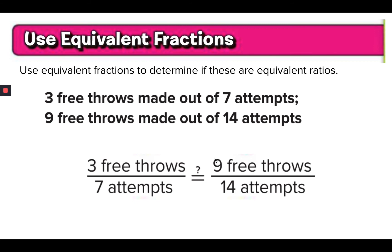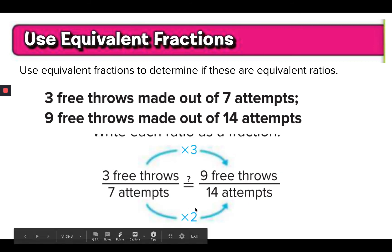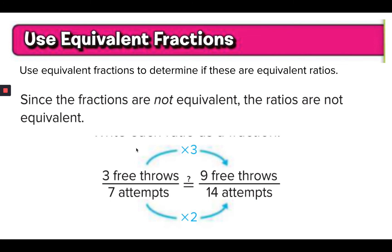Well, 3 times 3 is 9. If you multiply by the same thing on the bottom, is 3 times 7 14? No. So it's 3 times 2. You have to multiply different numbers, which means that this is not an equivalent ratio.